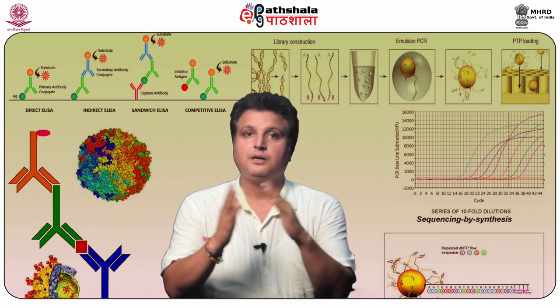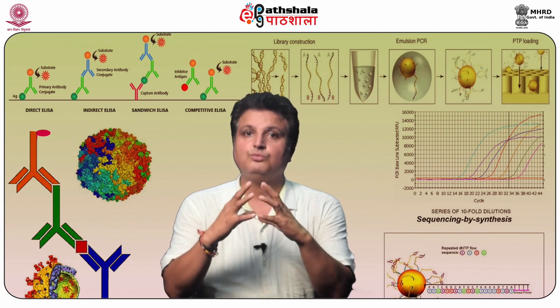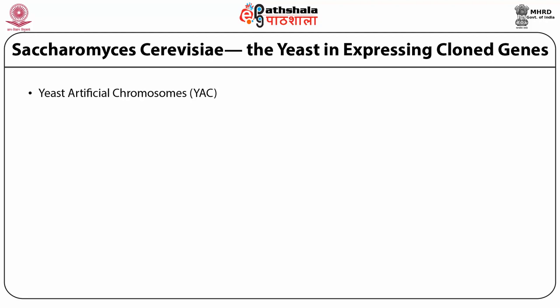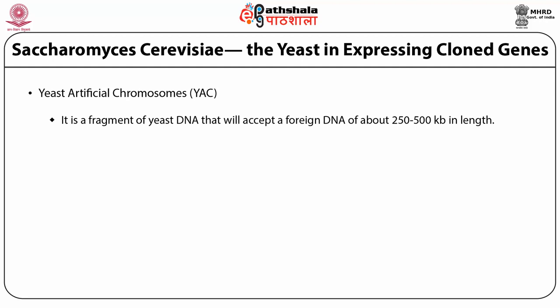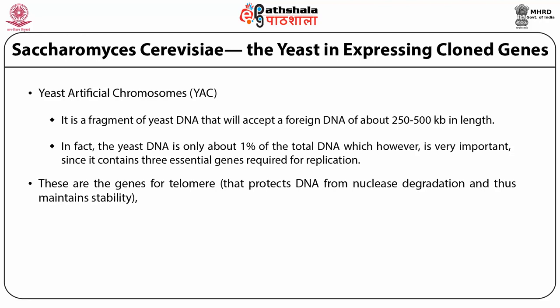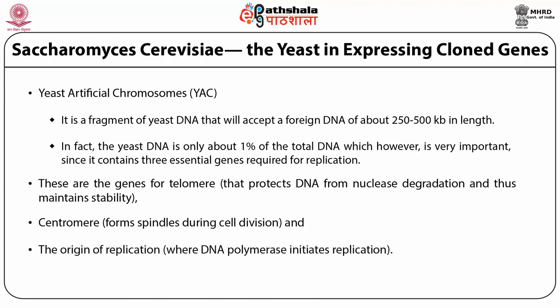Integrating vectors involve the integration of cloned genes with chromosomal genes. These are not frequently used since protein production is very low. The yeast artificial chromosome is a fragment of yeast DNA that will accept a foreign DNA of about 250 to 500 kilobases in length. The yeast DNA is only about 1% of the total DNA, but it is very important since it contains three essential genes required for replication: genes for telomeres, centromere, and origin of replication.